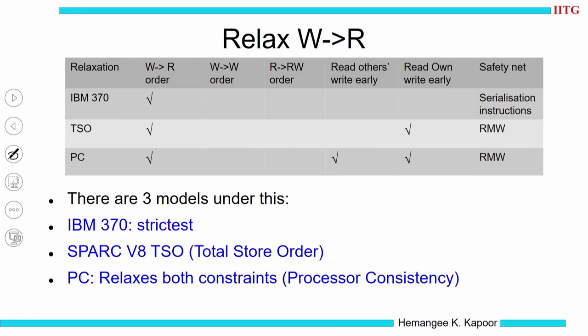Under the write-followed-by-read relaxed order, I have three models. The first one is the IBM 370 model — it relaxes this WR order. All these models are going to relax the WR order. They do not relax write-write, they do not relax read-write. That is why those columns are blank.